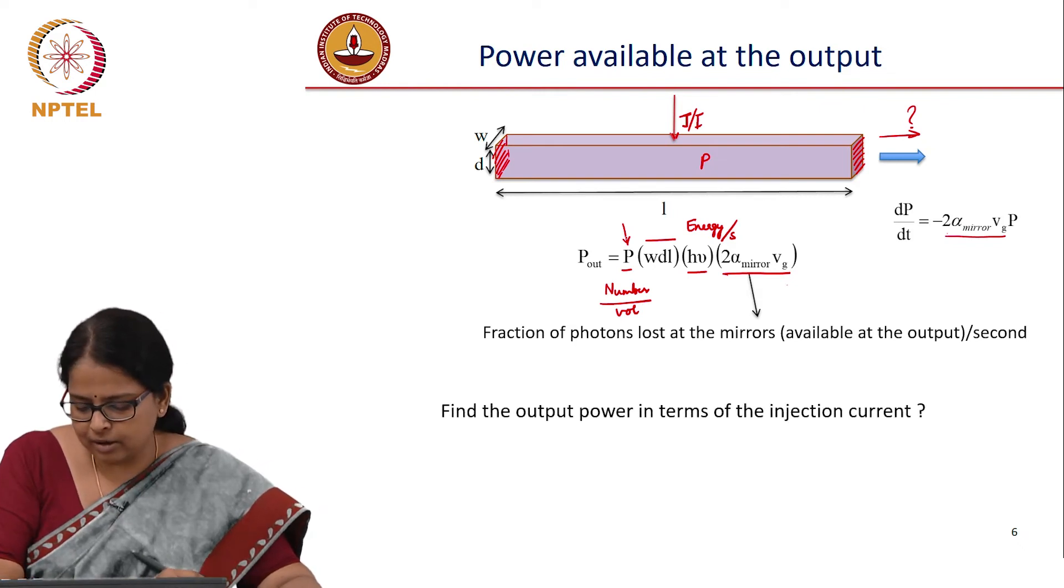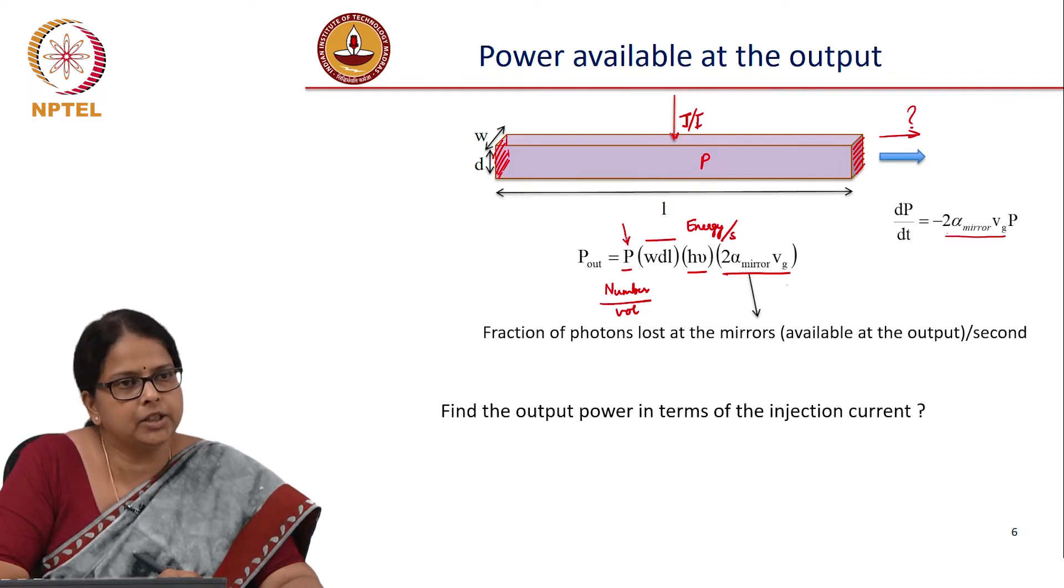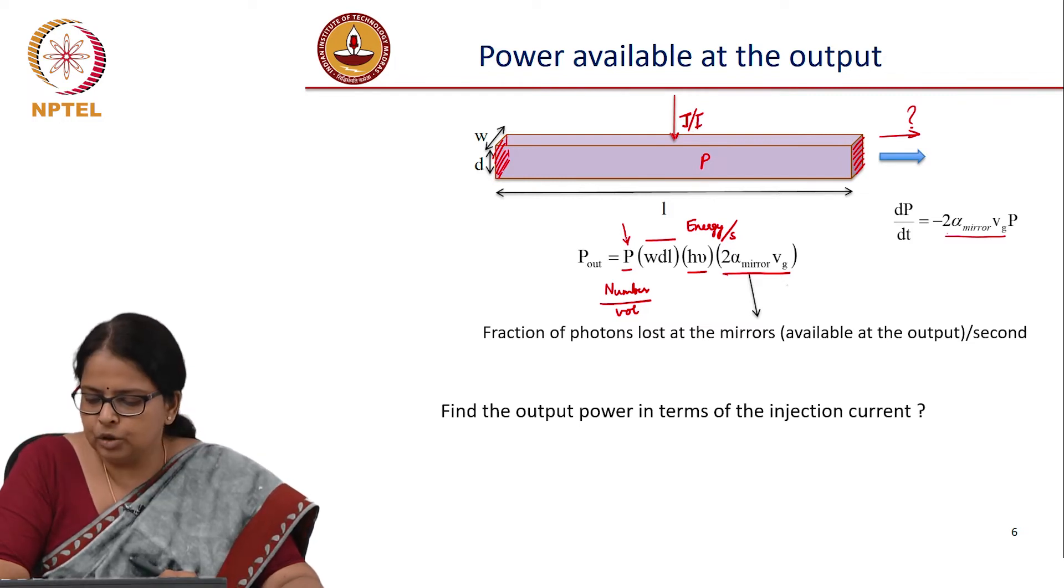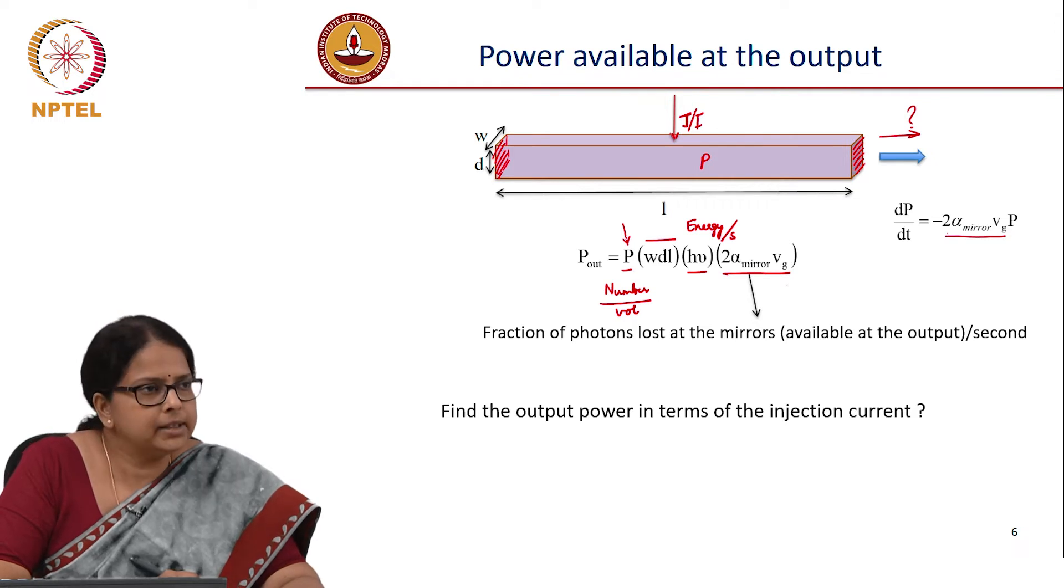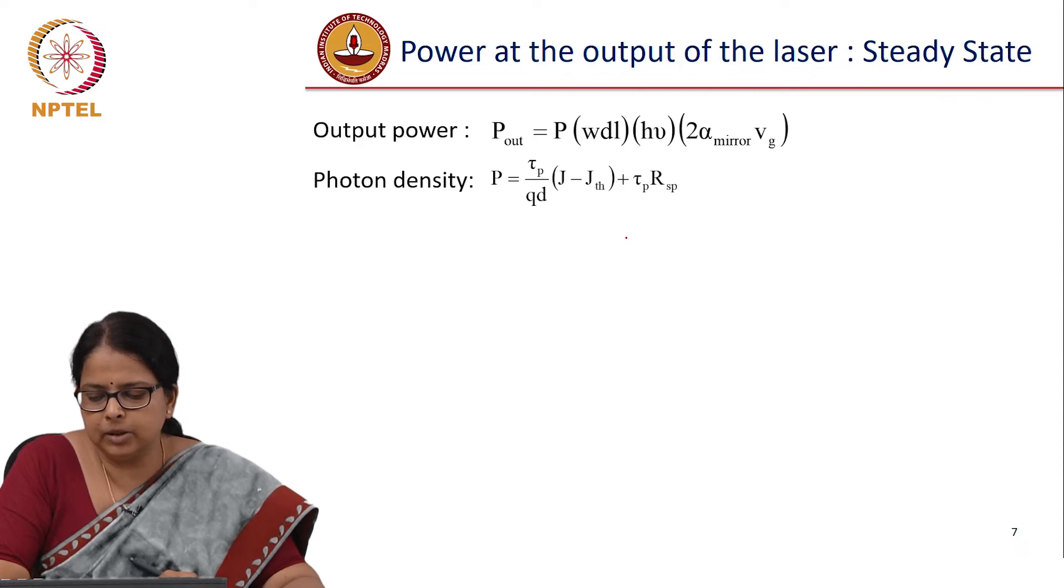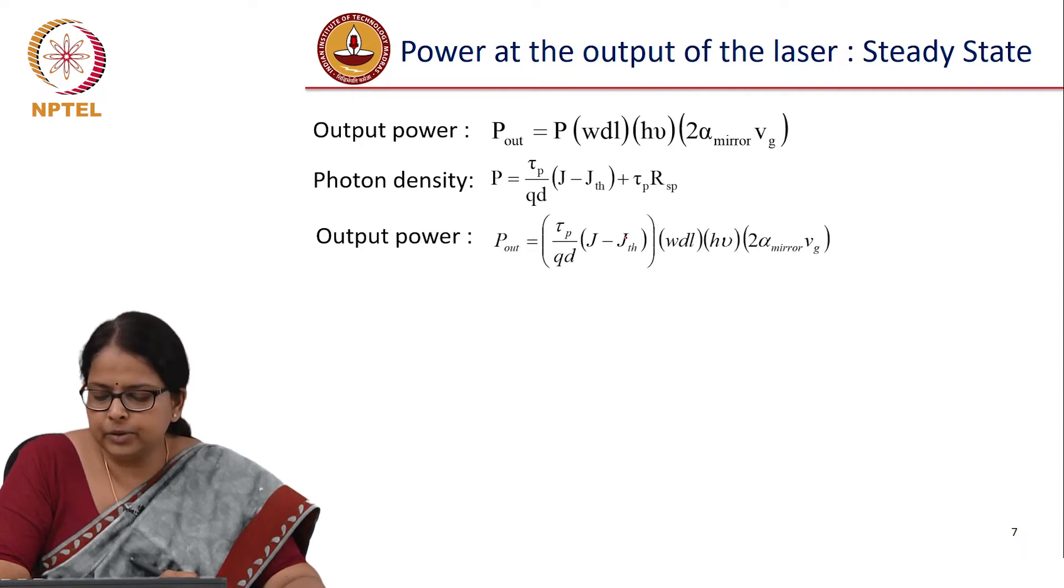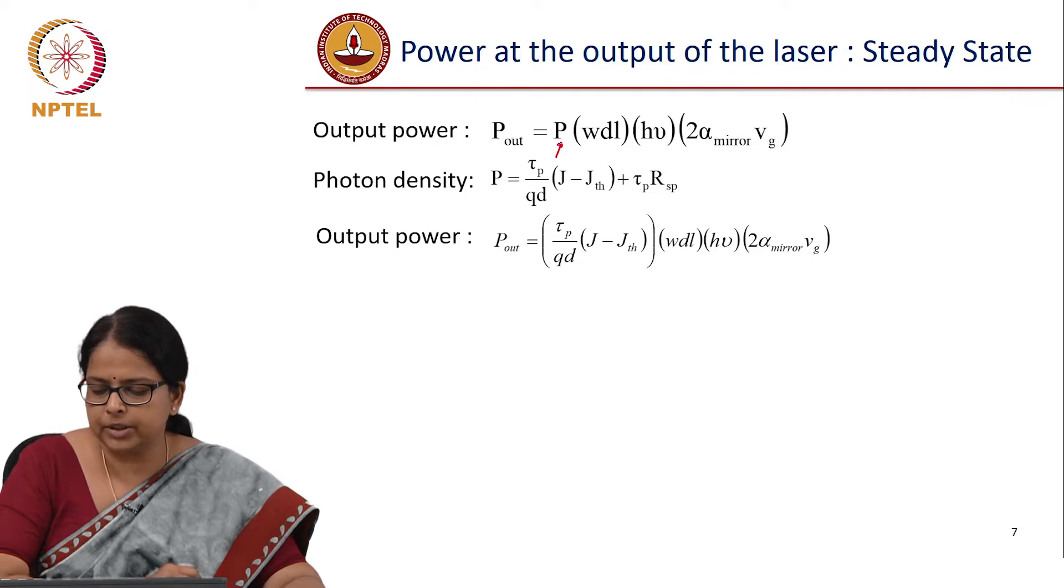So, exercise for you: find out the power in terms of injection current, this is not in terms of current. So I need to write down P in terms of current and then substitute in this equation. So output power is, this is what we wrote down. Photon density P, we just said that it was τ_P by Qd (J minus J_th), τ_P R_sp, what we derived earlier, you just have to substitute here, so this goes into this equation.